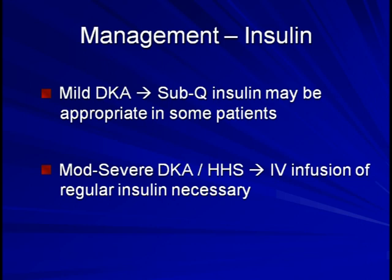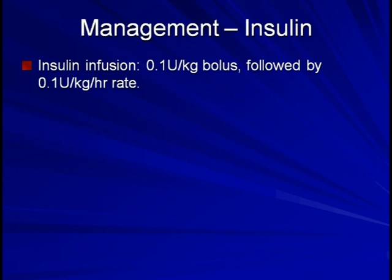There are several different protocols for selection of IV insulin regimens, but there has been no difference seen when compared head-to-head. Therefore, for simplicity and ease of remembering, I prefer the following option: a 0.1 unit per kilogram bolus followed by a 0.1 units per kilogram per hour continuous rate.